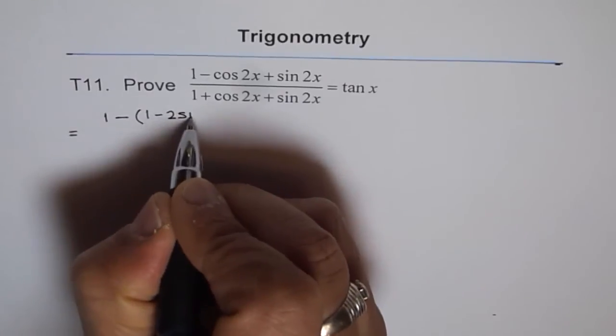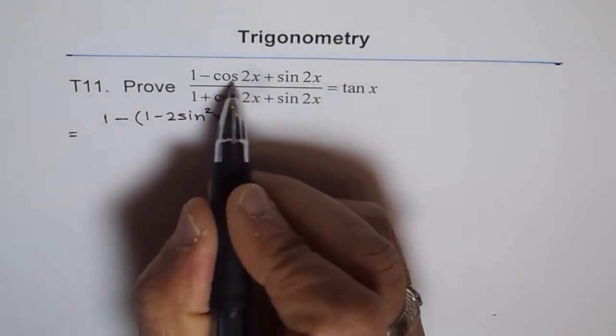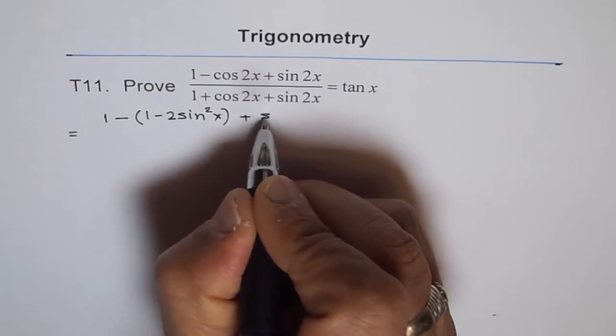1 minus 2 sin square x. So that is a better form of cos 2x to write here, plus sin 2x.